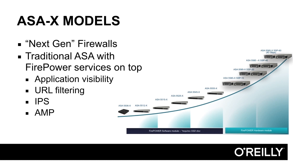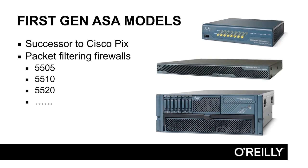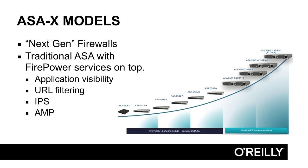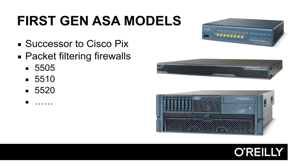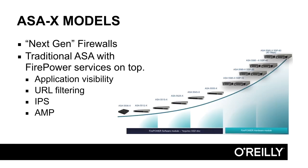It's important to remember that the ASA software running on ASA X models is exactly the same as traditional ASA firewall software — there is no difference. You can identify an X model because the model number has a dash-X at the end. For example, the 5505 is a traditional ASA firewall, while the smallest ASA X model is the 5506-X. It is essentially the same as the 5505 but can also run Firepower services. Without a Firepower license, there is no practical difference between them.